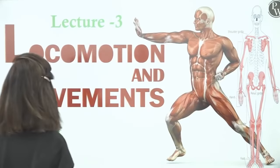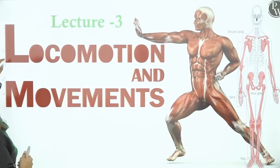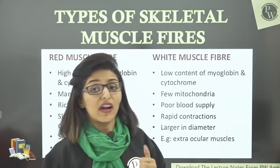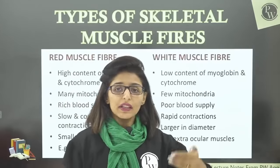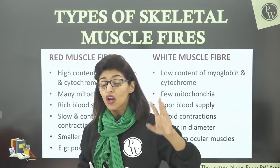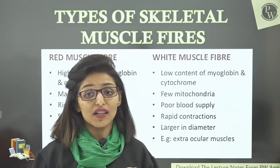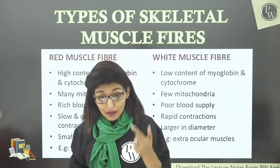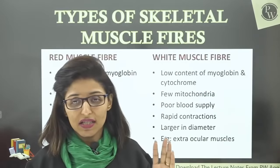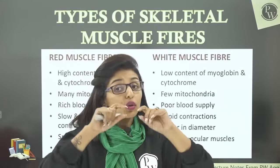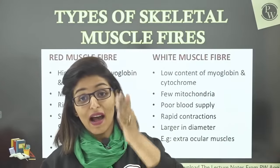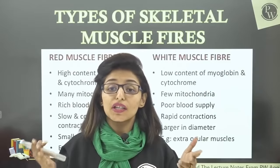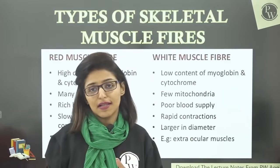Let's continue with Chapter: Locomotion and Movement, Lecture 3. We have read how muscles contract, and everything so far is about your skeletal muscles — the ones attached to your bones, which are under your control and work by your will. So we also call them voluntary muscles. And because striations are present on them due to A-band and I-band, we also call them striated muscles.